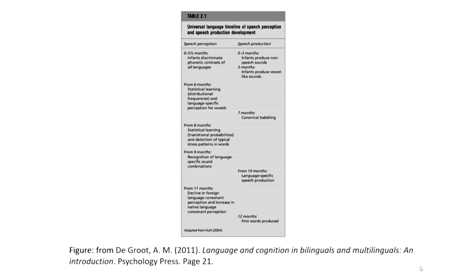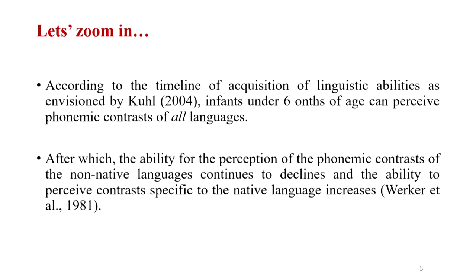Around 6 months of age, children use statistical learning to learn language-specific phonemic contrasts, but around 11 months they start experiencing a decline in foreign language consonant and vowel perception. Part of the answer is that this ability starts in a language-general format but gradually becomes more language-specific as children grow. They pick up more information from their native language and, because they are not finding use for distinctions in languages they may not ultimately be exposed to, they start showing a decline in that capability.